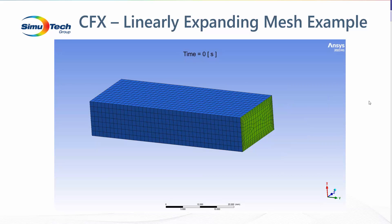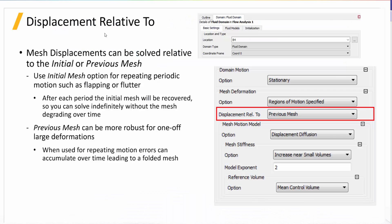Before opening up the ANSYS software, I'd like to talk in more detail about the different options related to mesh motion. First, under your fluid domain tab, there is a domain motion section. In here, we're going to change the mesh deformation option — by default it's none — to regions of motion specified. There's also a displacement relative to option, which can be either initial or previous mesh. Previous mesh is the default.